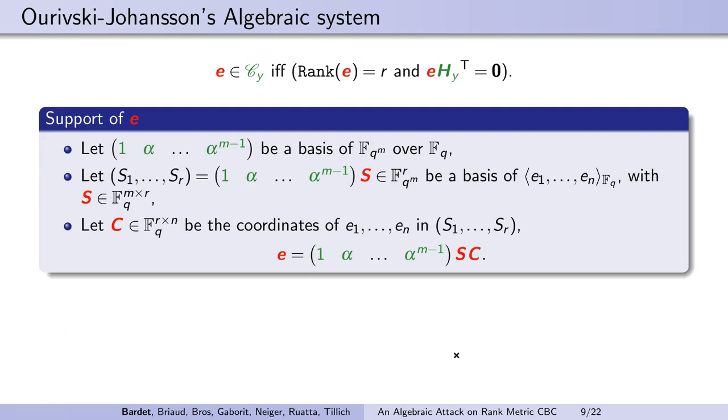The condition that E has rank r can also be algebraically described. If alpha is a generator of F_q^m over F_q, then E has rank r means by definition that the coordinates of E generate a vector space of dimension r over F_q. We call S_1 up to S_r a basis of this vector space, and S is the matrix of the coordinates of this basis in F_q^m. Then C is the coordinates of E in this basis S, and we can write E as the product of two matrices of rank r.